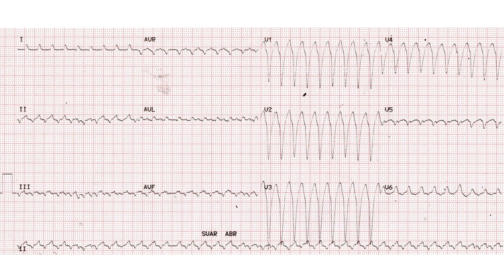Monophasic wide QRS complexes are seen from V1 to V5. V6 shows a positive wide QRS complex with LBBB morphology. Similar morphology is seen in leads I and AVL as well. The QRS voltages are low in limb leads.